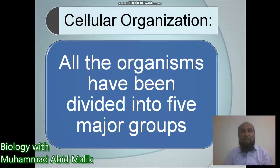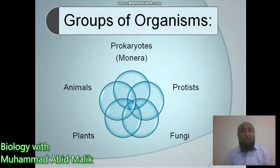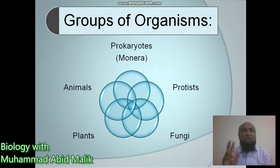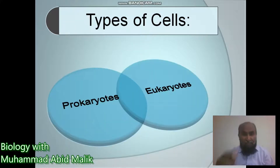All organisms have been divided into five major groups: Monera, Protista, Fungi, Plants, and Animals. These five major groups are further divided on the basis of their cellular structure into two major groups — prokaryotes and eukaryotes.